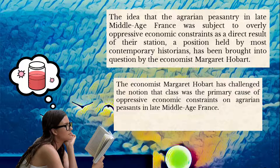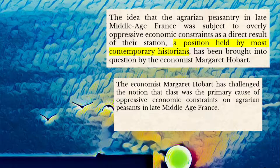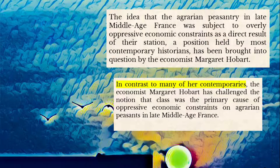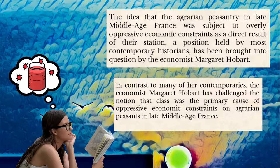That sentence takes a lot less mental strain to process. And now, if need be, I can go back and add that interrupting phrase we took out. If we add it back as an introductory phrase, we don't lose the important point that Margaret's idea is a contrarian position. Here's what that would look like: 'In contrast to many of her contemporaries, the economist Margaret Hobart has challenged the notion that class was the primary cause of oppressive economic constraints on agrarian peasants in late middle-aged France.' This sentence is certainly much easier to understand than the earlier version, but it still isn't the easiest sentence to process.